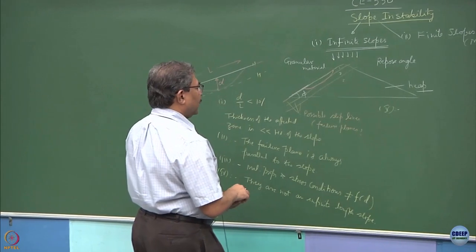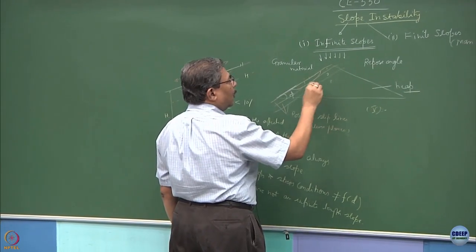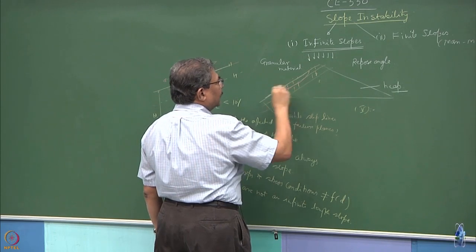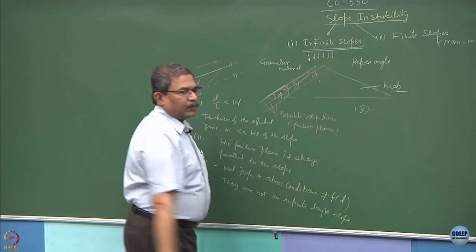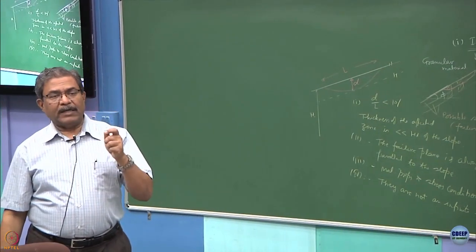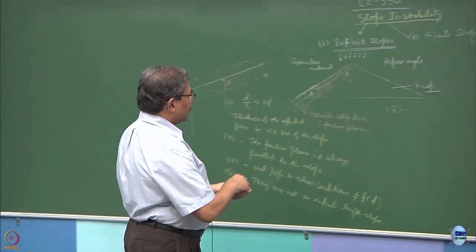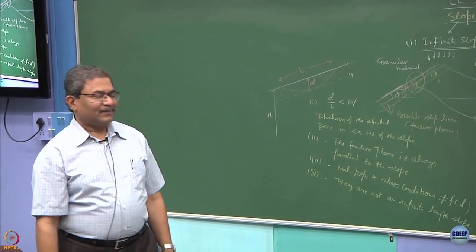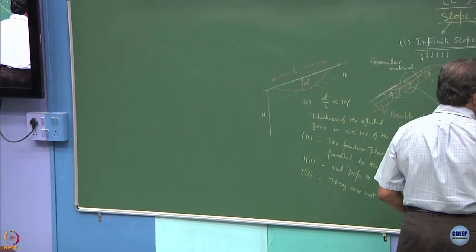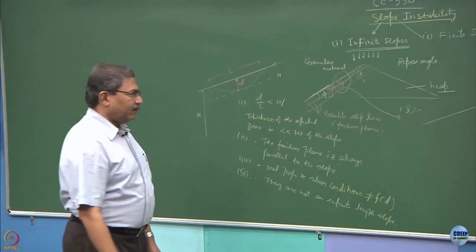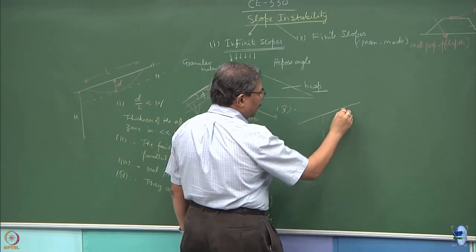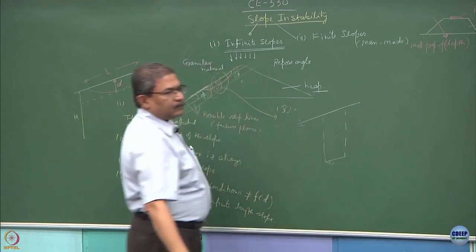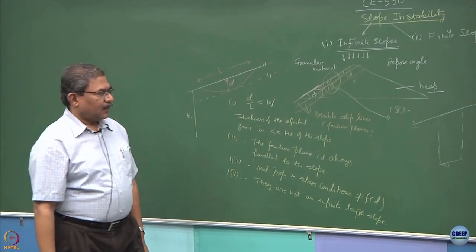The next characteristic is the state of stress. Stress between any vertical element of the soil is identical. Suppose if I take an element here, or an element here, or an element here — this becomes one element. This is another element, and this is another element. Stress between any vertical element of the soil is identical. Now, if I take it out and zoom in and try to draw the free body diagram, we have taken a slice.